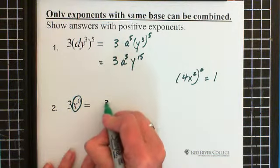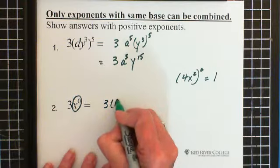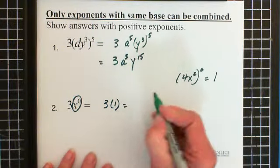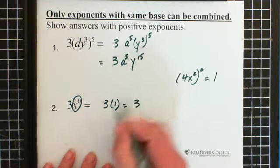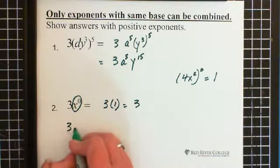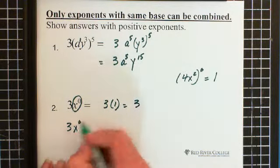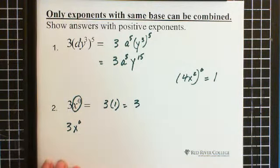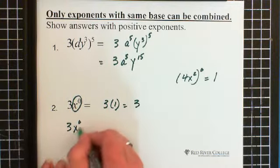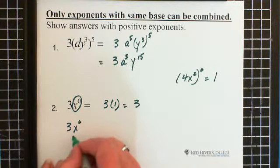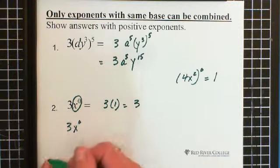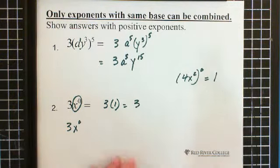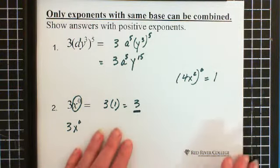So what we have then is 3 times 1, which is 3. And don't forget, we have 3x to the power of 0. It's not 3x that's raised to the power of 0. It's only the x. So only the x becomes a 1, not the whole thing. So this is our answer. Our answer is 3.